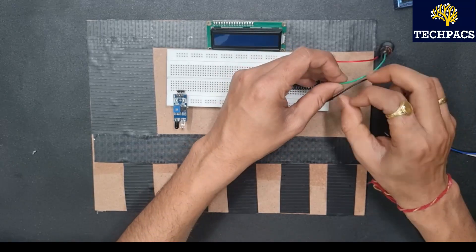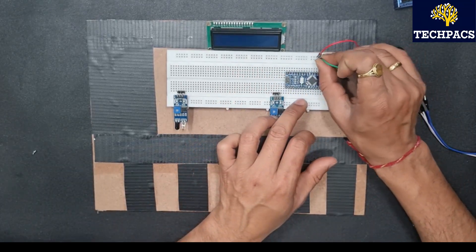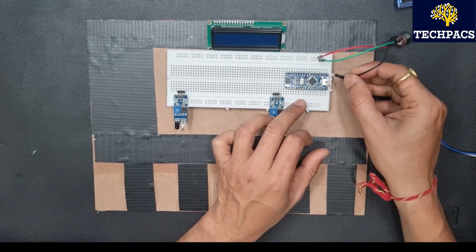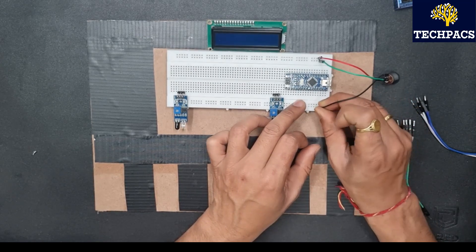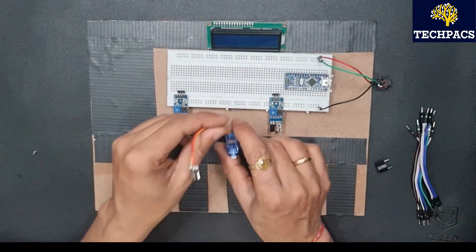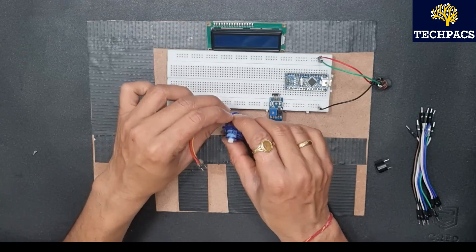Here is a power connector. This way we will supply the power to the project. Next is the servo motor.